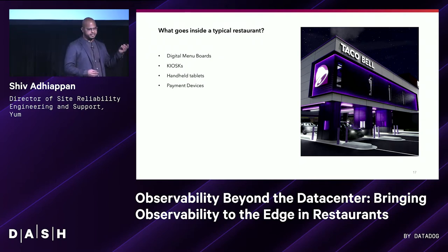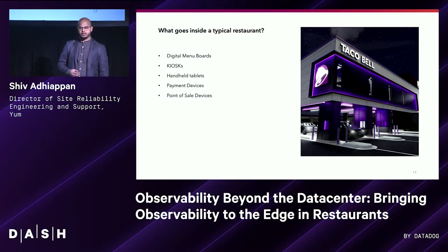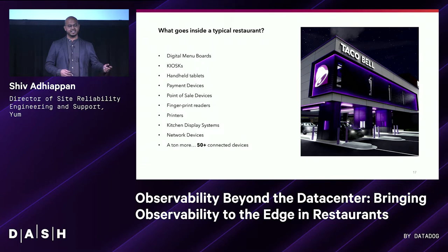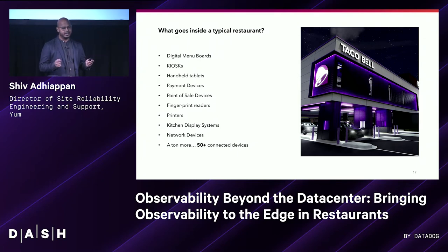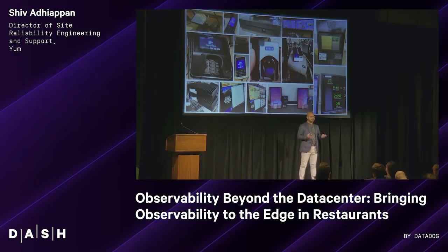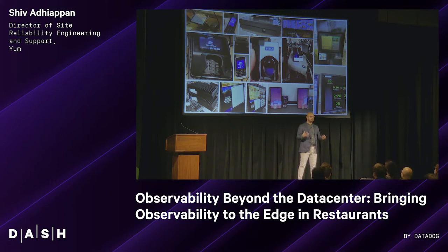Printing devices, point of sale, printer readers, kitchen display systems, networking devices — 50-plus connected devices go into each one of these restaurants at least. This is a combination of some of these devices, and we have to observe and monitor all of them. These devices were brought together and built into the restaurant for the modernization effort. Now with observability, the first challenge was that they wanted to modernize with technology for better operations. So we started exploring — scratching the surface on what it takes to get visibility into a restaurant. It was a lot.